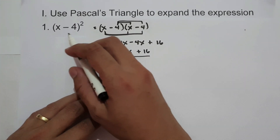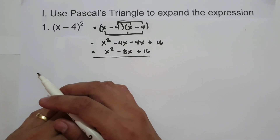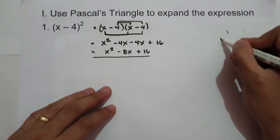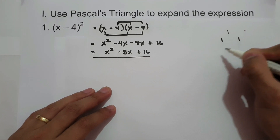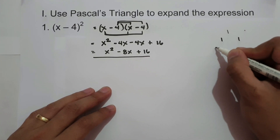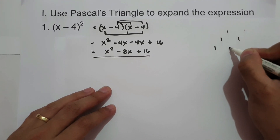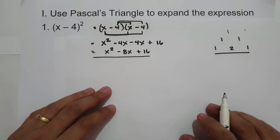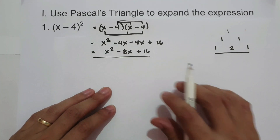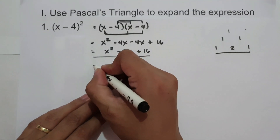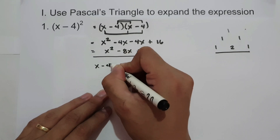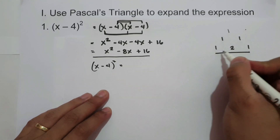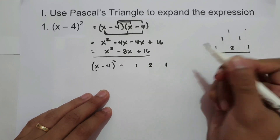Or, you can solve (x minus 4) squared using Pascal's triangle. In Pascal's triangle, we have 1, then 1 and 1. The second row will be 1, then 1 plus 1 is 2, and then 1. So these are the coefficients we're going to use to expand this binomial. We have x minus 4 squared, and the coefficients are 1, 2, and 1.